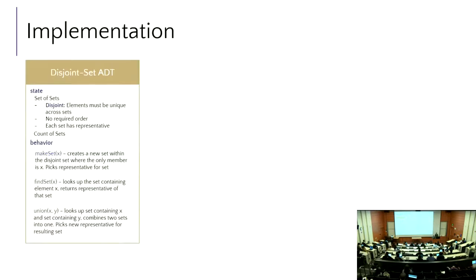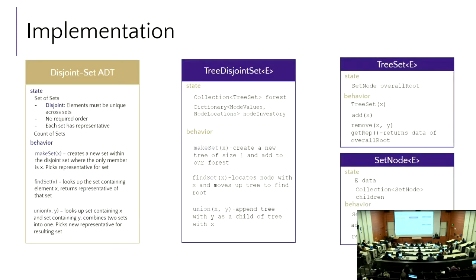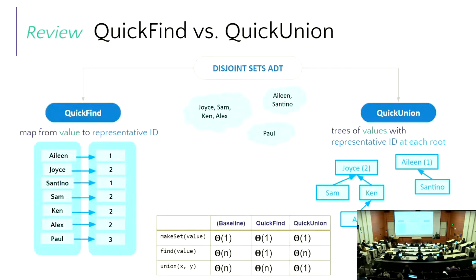We met the disjoint set ADT — a set of sets. We talked about the tree disjoint set implementation. Here's foreshadowing: this is very similar to heaps in that the trees are theoretical trees, and you'll find we're actually going to implement this using an underlying array. Why do we learn all these tree things? Everything's an array underneath. The theory still matters, but that array is always our favorite.